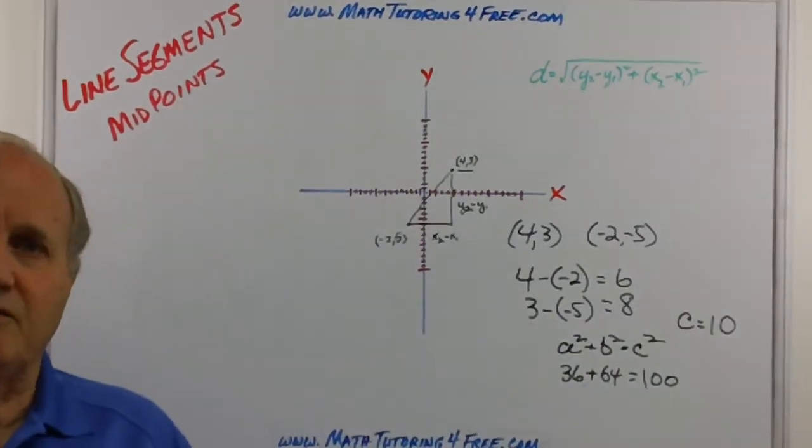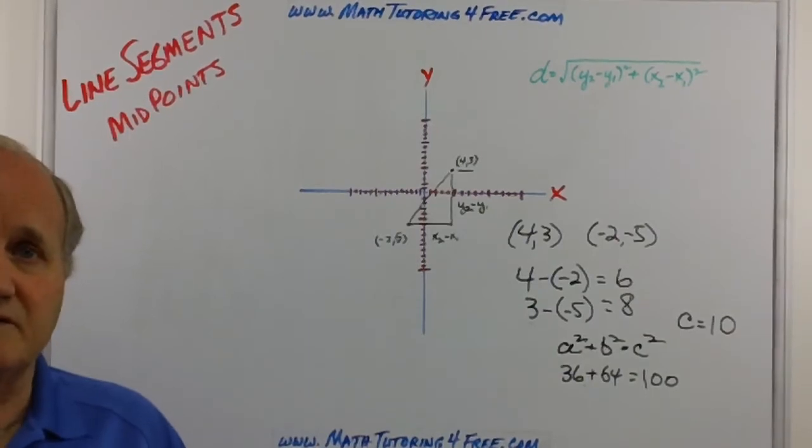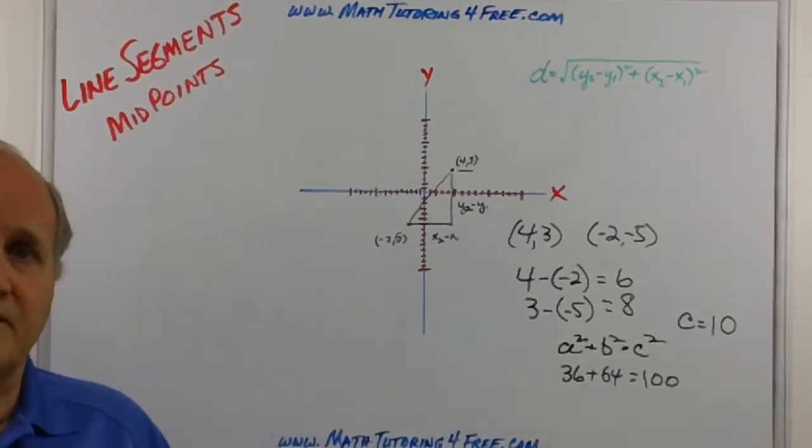So thinking through, recognizing that we have a right triangle, the difference in the y's is the vertical leg, the difference in the x is the horizontal leg. I think it's much easier and actually probably simpler in the mind of the student rather than trying to figure out what formula am I supposed to use.